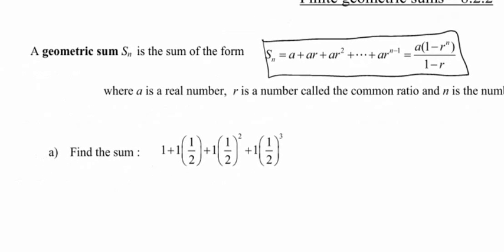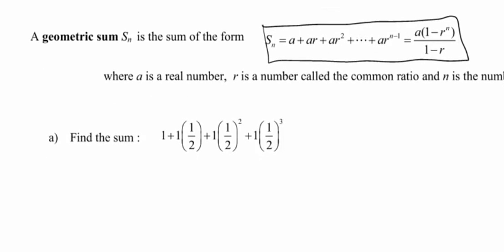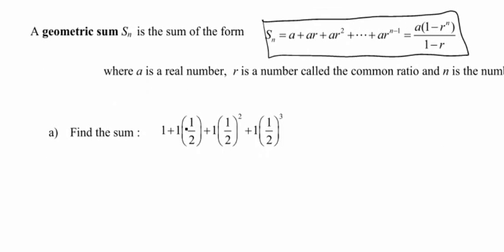All right, so part A here says find the sum of 1 plus 1 times 1 half, plus 1 times 1 half squared, plus 1 times 1 half cubed. Now obviously you could just throw these numbers in your calculator, it's gonna give you an answer, but that's no fun, right? Why would we wanna do that?